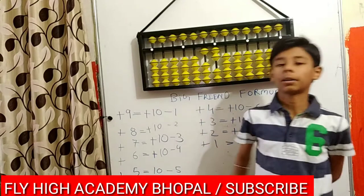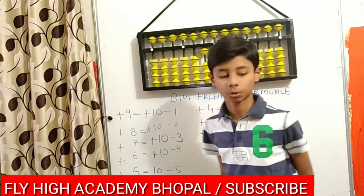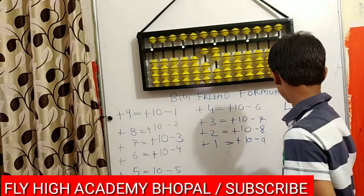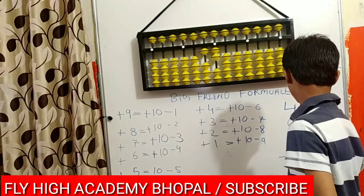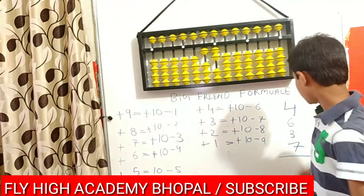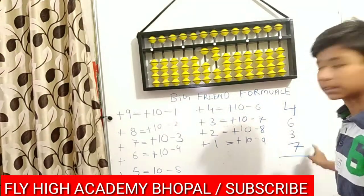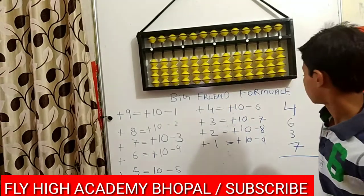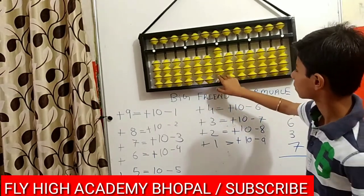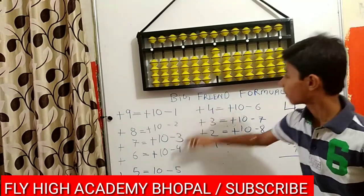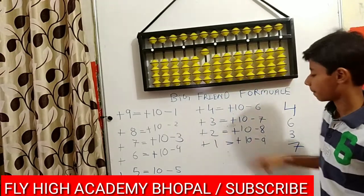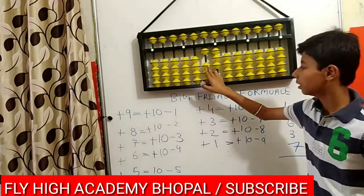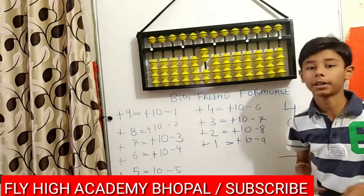Now going forward to the plus 6 formula. Plus 6 formula is equal to plus 10 minus 4. The question is 4 plus 6 plus 3 plus 7. So 6 equals to plus 10 minus 4. Plus 6 and plus 4 equals to 10, so here is 10, and now plus 3 and then plus 7. The answer equals to 20.